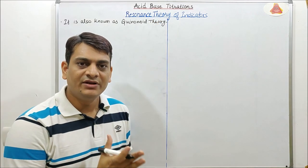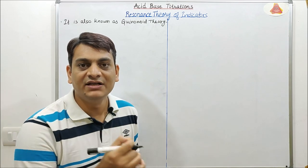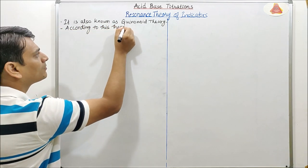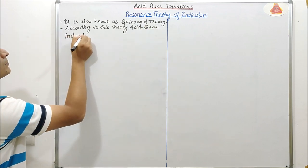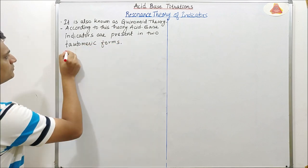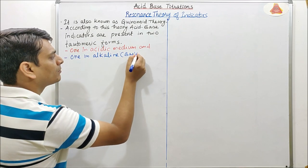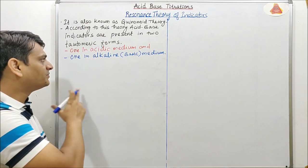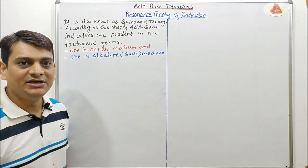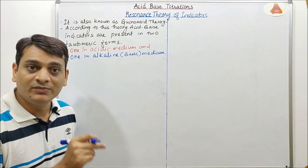According to this theory, acid-base indicators exist in two tautomeric forms which have different structures in acidic medium and basic medium. In acidic medium the structure will be benzenoid form, and in alkaline medium it will be quininoid form.